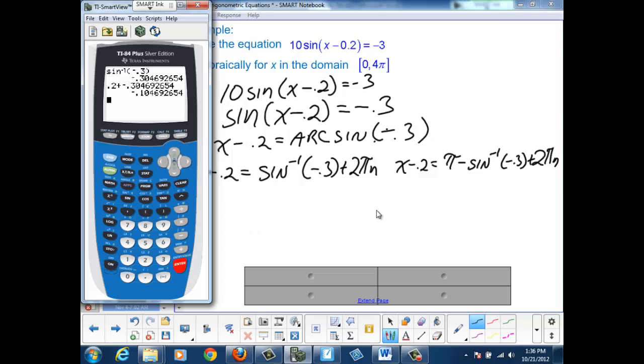So I'm going to remember that number. And then I'm going to go over to the second solution, which is x - 0.2 = π - sin⁻¹(-0.3). So I'm going to take π and subtract the inverse sine value and get 3.446.